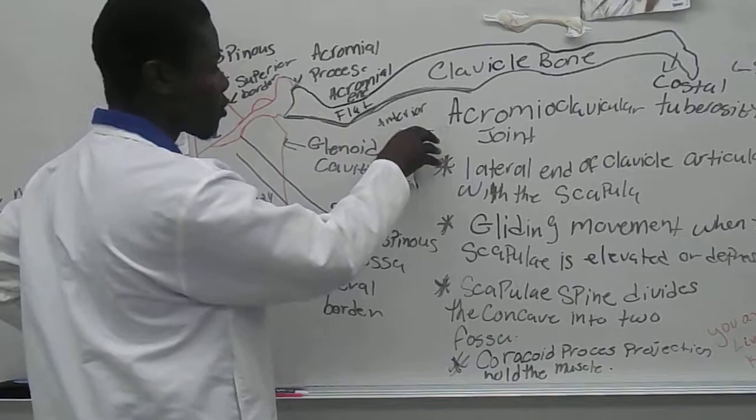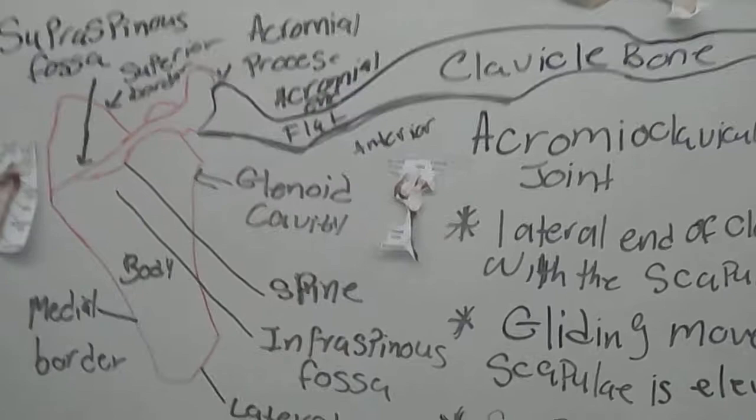The coracoid process of the scapula is the projection where muscles are held and here is an anterior view of it.